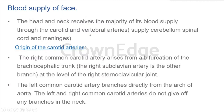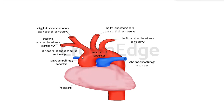The internal carotid also supplies the brain and other accessories. The main supply for the face and the superficial regions comes from the carotid artery and its branches. There is a right common carotid and left common carotid. The right common carotid arises from the bifurcation of the brachiocephalic trunk. The arch of aorta divides into three different branches: left common carotid, left subclavian, and brachiocephalic trunk, also called the brachiocephalic artery.